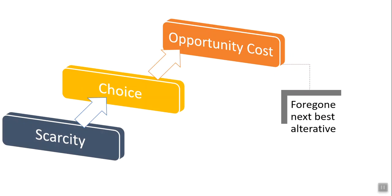Remember, there is nothing free in this world — everything has its cost. If you achieve one thing, you have to sacrifice another. We call it the forgone next best alternative — whatever next best alternative you had, you forgone that thing.